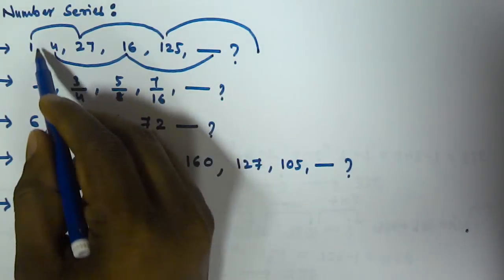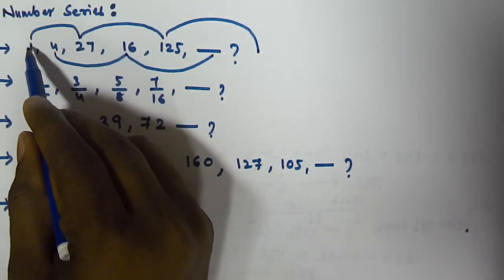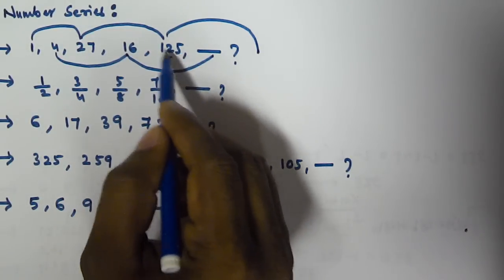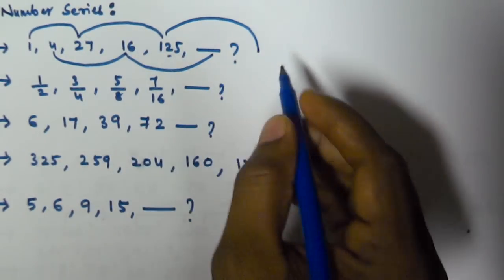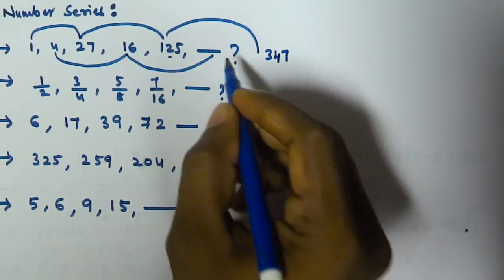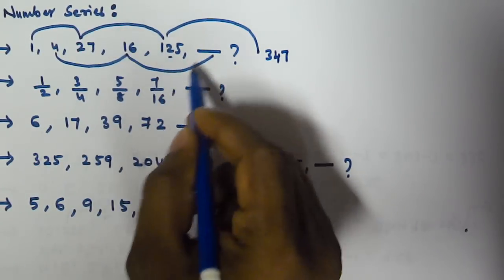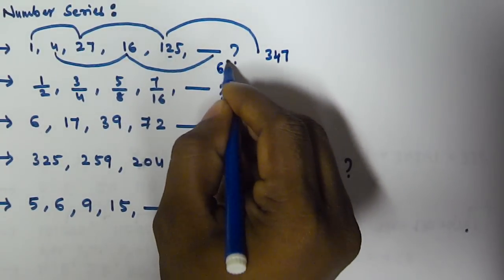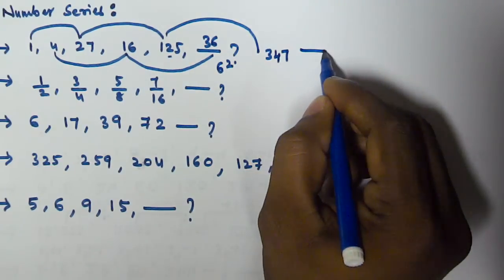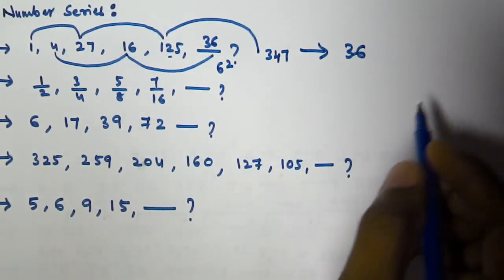The other series is squares: 2 square and 4 square, so next comes 6 square. So 5 cube is 125 and 7 cube is 343. But we need to find the next square term, which is 6 square. 6 square is 36. So the next term in this series is 36.